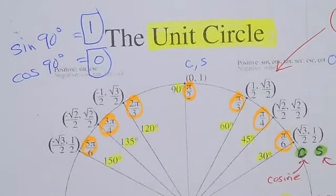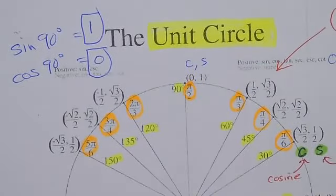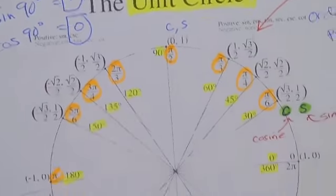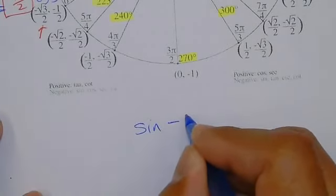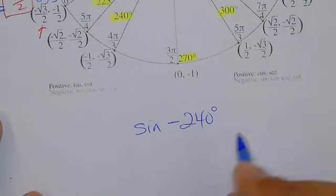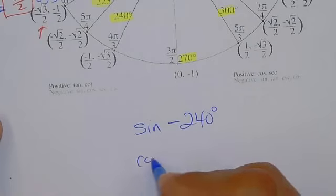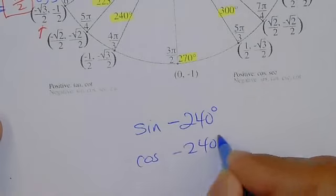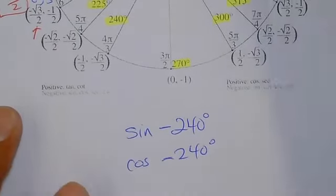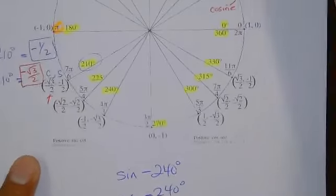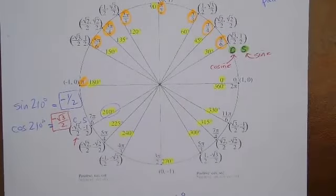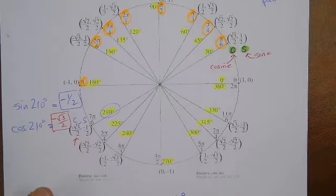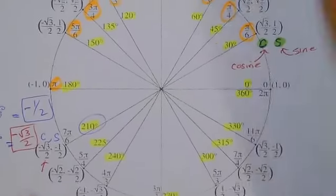Let me tell you what's not here. Tangent is not here — we'll learn tangent on the next assignment. What else is not here? What if I ask for sine and cosine of negative 240 degrees? The negative angles are not here.